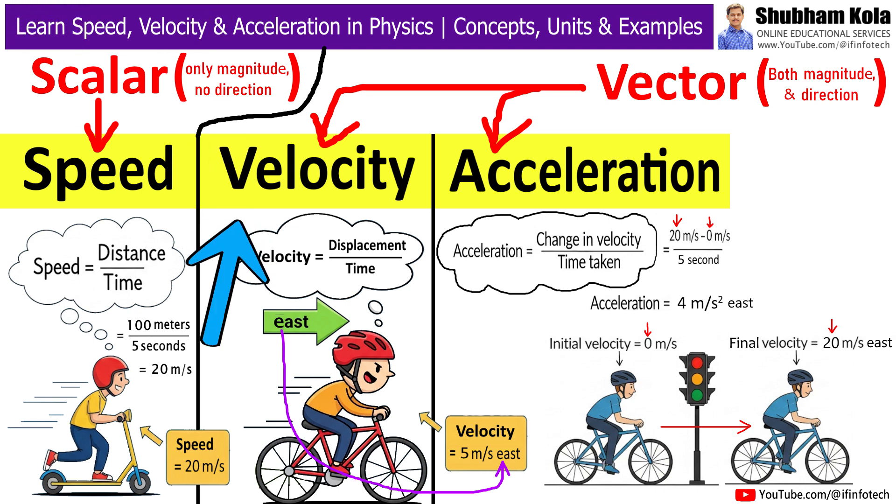Now, next is velocity. Velocity is just like speed, but it also includes direction. So, if speed tells you how fast, then velocity tells you how fast and where.